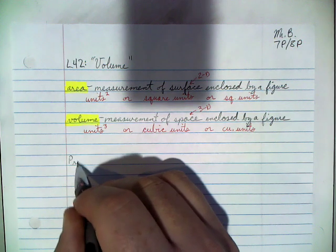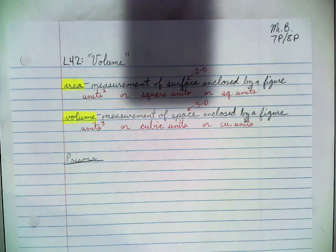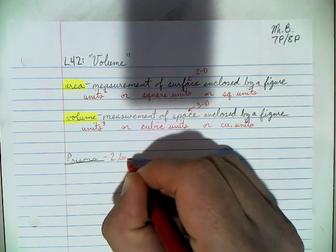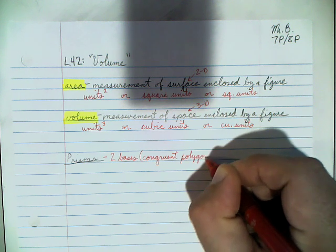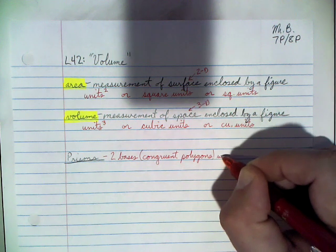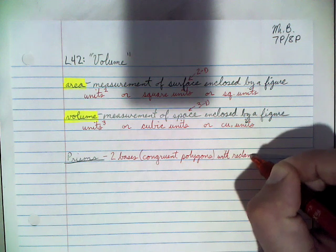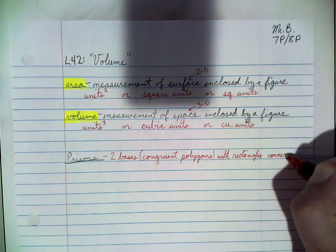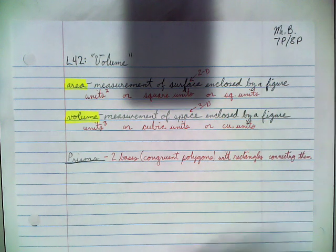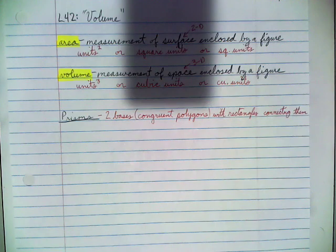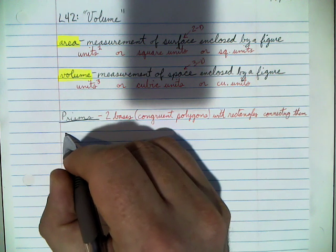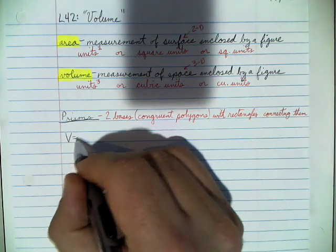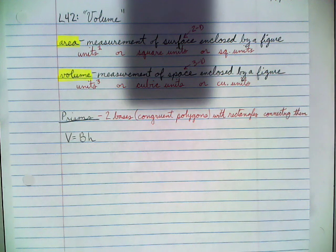When it comes to volume, we're going to start off with prisms. A prism is made up of two bases, and those bases are going to be congruent polygons, with rectangles connecting them. The formula for the volume of a prism is V equals capital B times lowercase h.